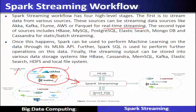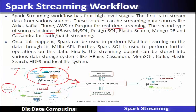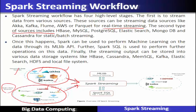The second type of data sources are called static data sources. They include HBase, MySQL, Postgres, SQL, MongoDB, and Cassandra. These are for the static or batch streaming data feed into the Spark streaming system.